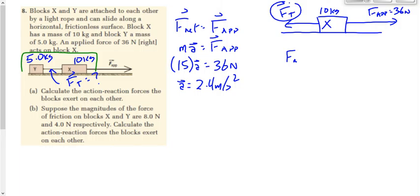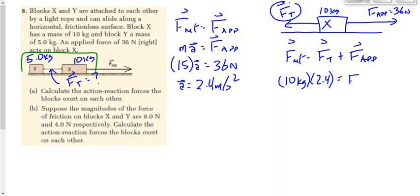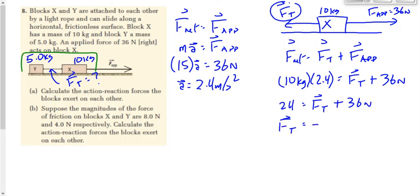F net is equal to the sum of the forces, but this time I'm analyzing one object with different forces acting on it. It's going to be FT plus F applied. The mass this time is 10 kilograms times the acceleration of 2.4, equals FT plus 36 newtons. That gives 24 on the left. Taking the 36 over by subtracting, we end up getting negative 12 newtons. So Y is pulling on X with a force of 12 newtons to the left.